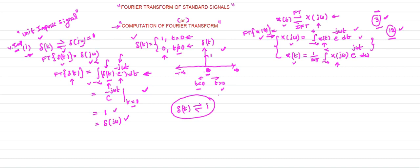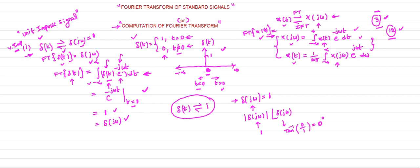This is the Fourier transform pair. The Fourier transform of the time domain signal results in a signal in the frequency domain, which is a complex function in terms of omega having two components: magnitude and phase. The magnitude of delta(jω) is 1, and the phase is tan⁻¹(0/1) = 0 for all values of omega.